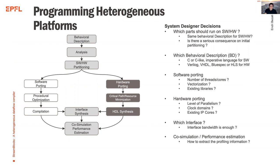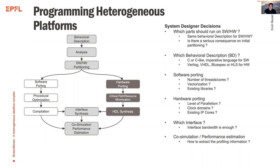From the hardware side, you decide the level of parallelism, different clock domains, and existing IP cores. Then you must decide how to interconnect hardware and software — is the accelerator on PCI Express, an AXI bus, or over the internet? You also need to consider bandwidth, co-simulation of the heterogeneous design, performance estimation, and how to extract profiling information from every individual part of the system.